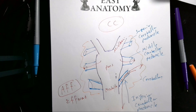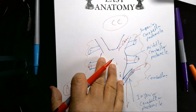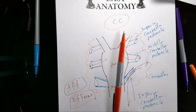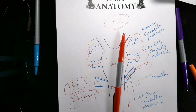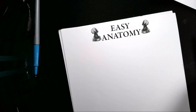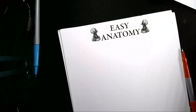The peduncles carry either afferent information — bringing signals to the cerebellum — or efferent information — taking signals from the cerebellum. They serve as the bridge between upper centers like the cerebral cortex and lower centers like the spinal cord. We will discuss this further in the second part of this lecture.